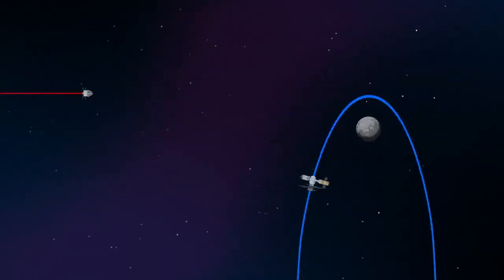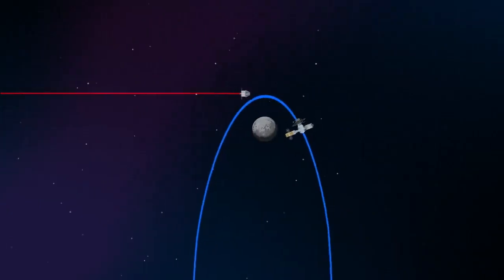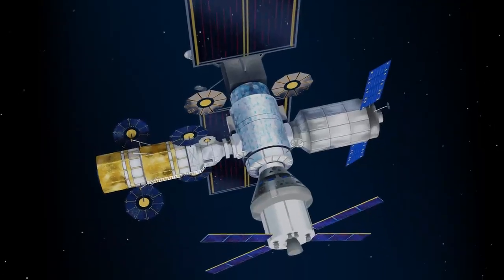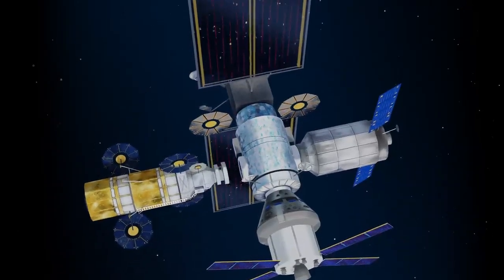Returning to our crew as they approach Gateway, the Orion must match the elliptical orbit of the station in order to successfully dock. Once on board, pre-selected crew members transfer to the lunar lander, while those assigned to Gateway remain on station.